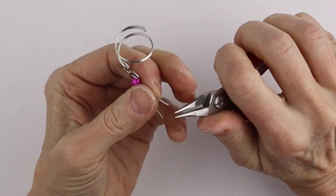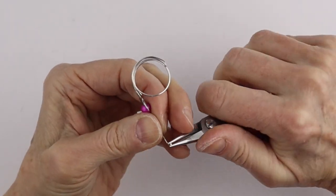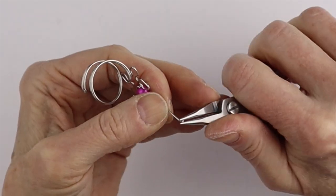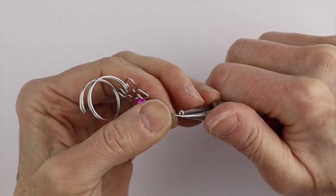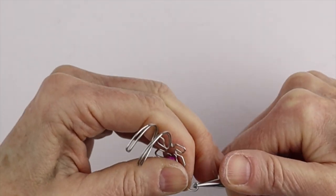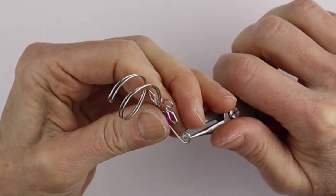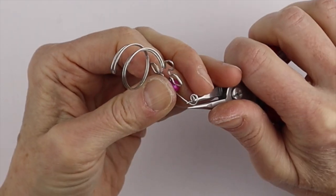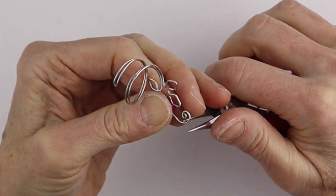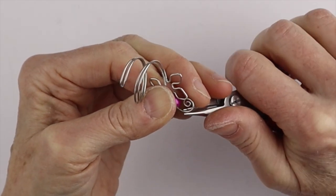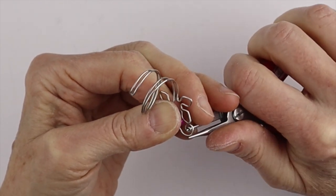And then from there, we can make the spirals. So just take the end, bring it in. And then flip it. Hold the end. Bring it in. Just rotate it around. And around. Just slowly bring it around.